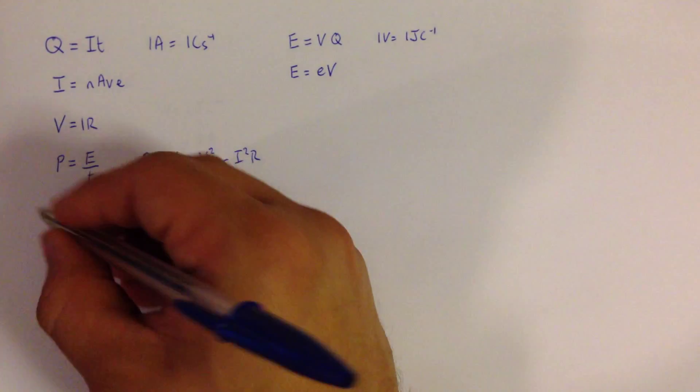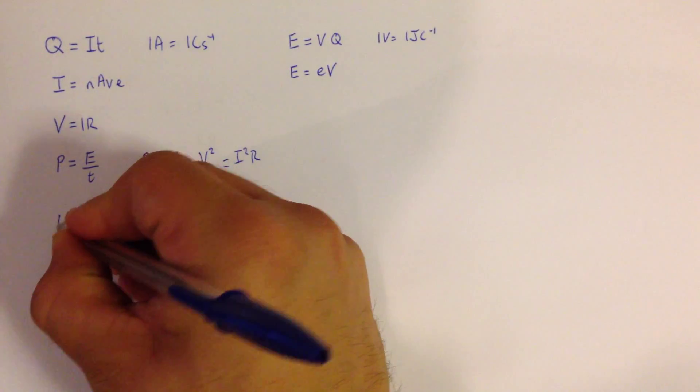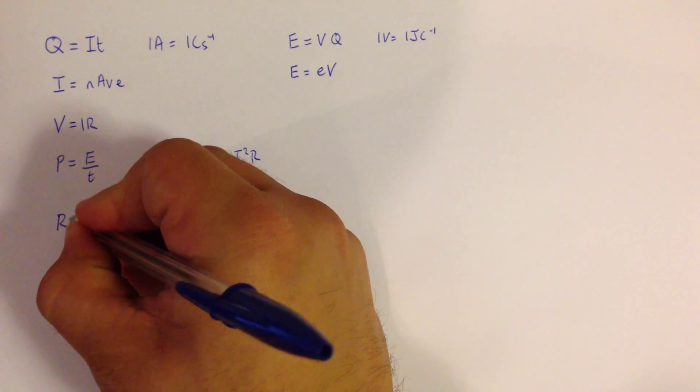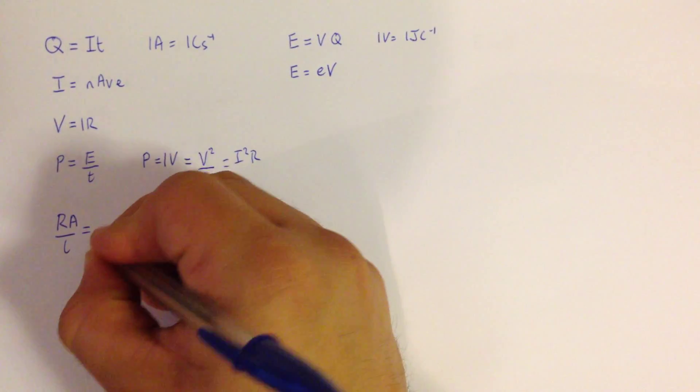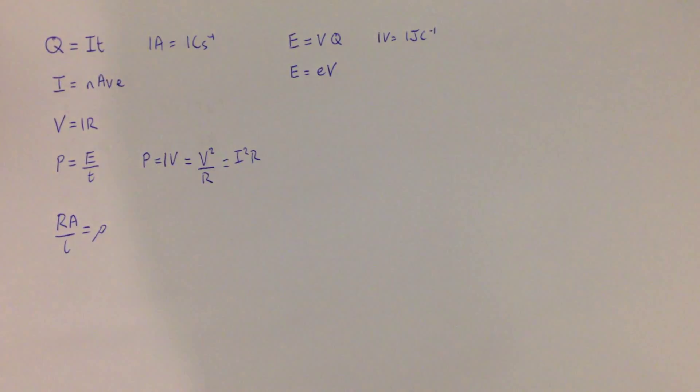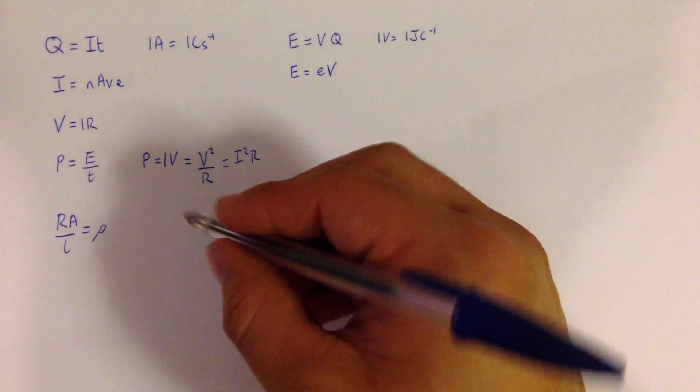We also get the equation for resistivity, which is that resistance multiplied by area divided by the length of the wire is equal to the resistivity of the wire.